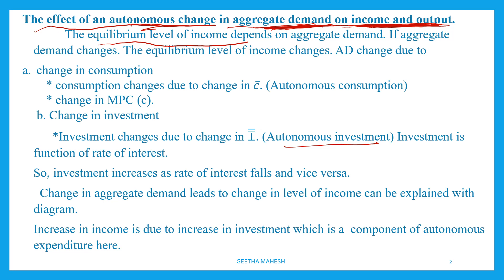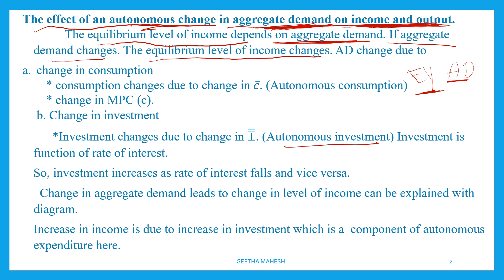Equilibrium level of income depends on aggregate demand. National income is determined by the level of aggregate demand. When the demand is at a certain level, income is determined accordingly. The equilibrium level of income depends on aggregate demand, due to changes in consumption and investment.